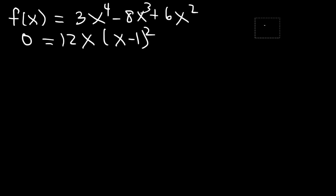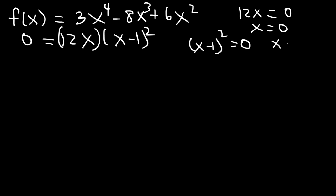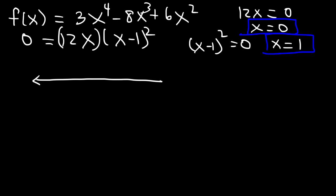Setting each factor equal to 0: from 12x = 0, the first critical number is x = 0. From (x - 1)² = 0, we get x = 1. So we have two critical numbers: 0 and 1. Now let's make a sign chart. For a number greater than 1, try 2: 12(2) is positive and (2-1)² is positive, so the result is positive. Traveling across x = 1, notice the multiplicity is even, so the sign will not change. But at x = 0, the multiplicity is odd, so the sign changes across 0, meaning the interval before 0 is negative.